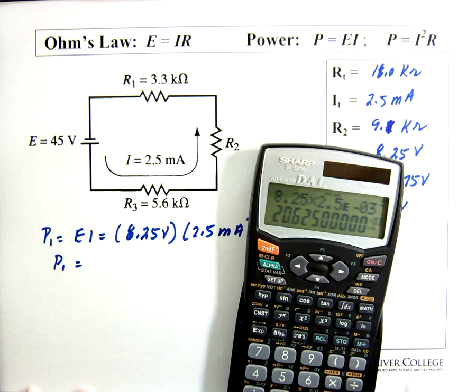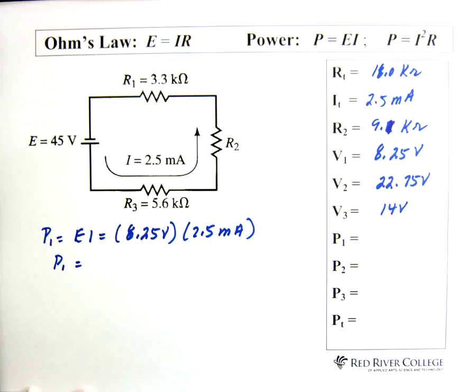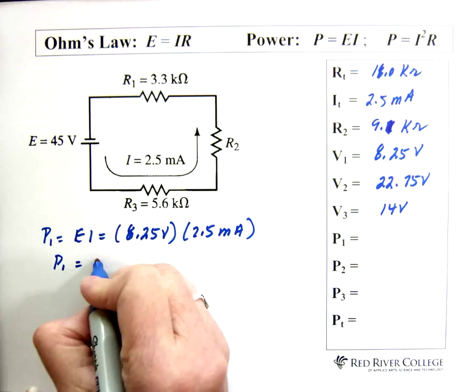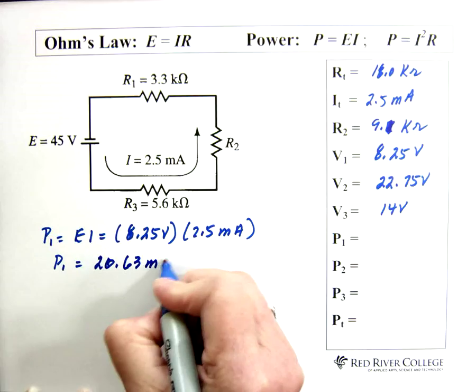The power 1 equals 8.25 times 2.5 exponent negative 3. So let's go with 20.63. Equals. 20. Let's go with 20.63. 20.63 milliwatts.